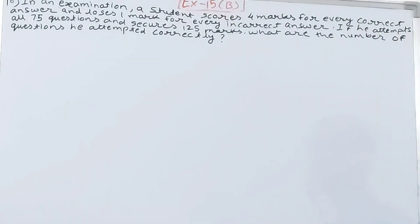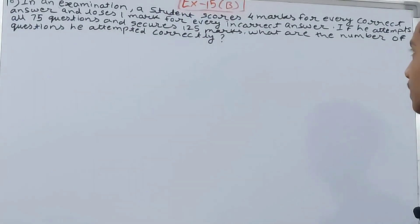The problem states: In an examination, a student scores four marks for every correct answer and loses one mark for every incorrect answer. If he attempts all 75 questions and secures 125 marks, what is the number of questions he attempted correctly?